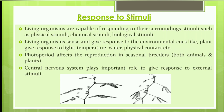Plants give response to light, temperature, water, physical contact, and photoperiod. The daytime during which an organism receives illumination affects reproduction in seasonal breeders, both in animals and plants. The central nervous system plays an important role in responding to external stimuli in us.